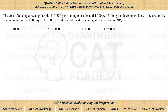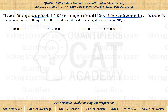Now let us come to the question. I hope all of you have tried it. It is given that the cost of fencing a rectangular plot is 200 per feet along one side and 100 per feet along the other three sides. The area of the plot is given as 60,000. We have to find the lowest possible cost of fencing all four sides.